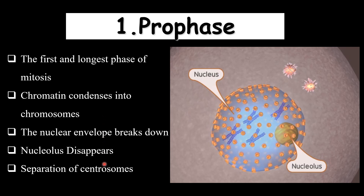These changes take place in early prophase: the chromatin condenses into chromosomes, the nuclear envelope starts to break down, the nucleolus disintegrates, and the centrosomes begin spindle formation and start moving towards the opposite poles.